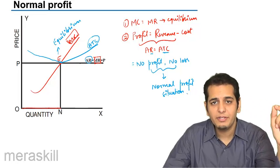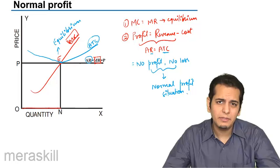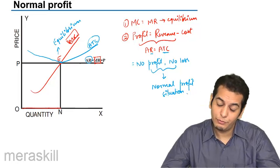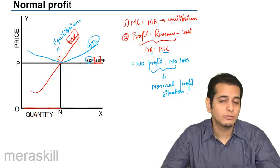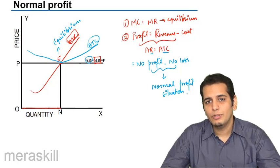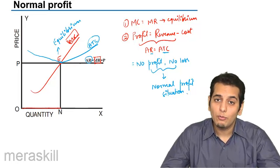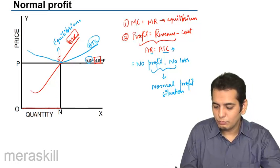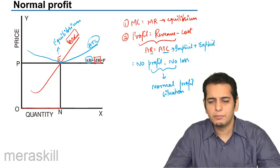You can see that your revenue is equal to cost. So there will be no supernormal profits that you will be earning. You will only be recovering your salary that you would have earned if you would have worked somewhere else, the interest, the rent that you would have earned if you would have not done your own business but would have given it for rent, and also profit for the risk that you are taking. Because ATC includes both implicit and explicit cost.